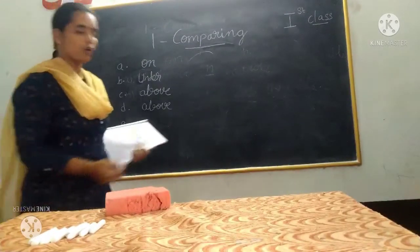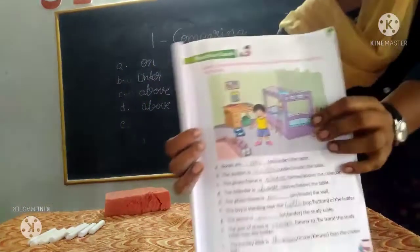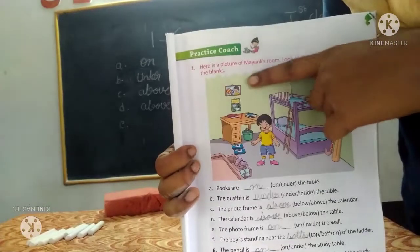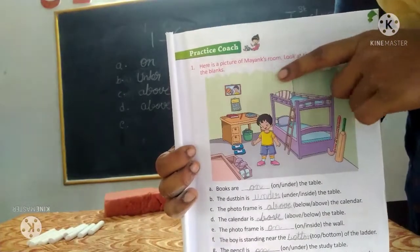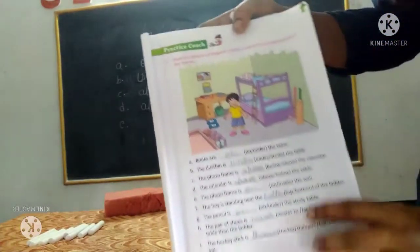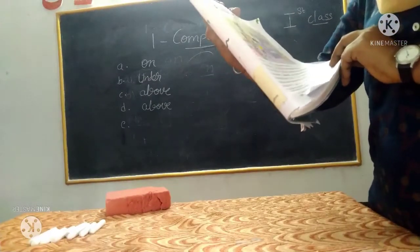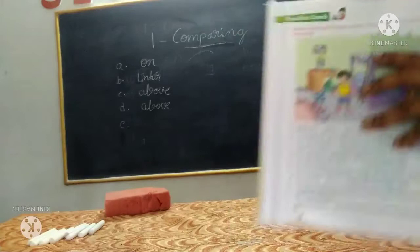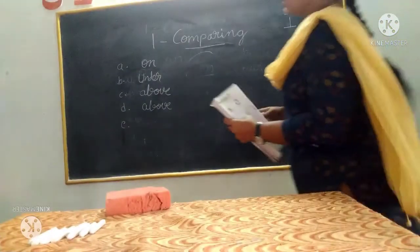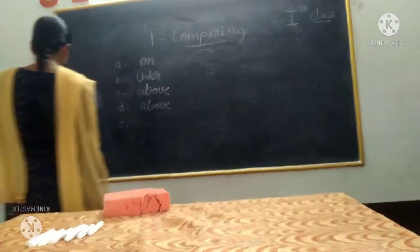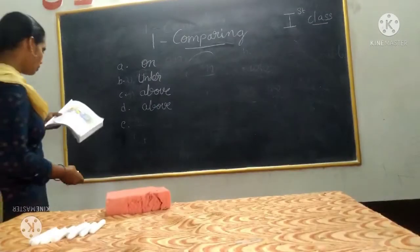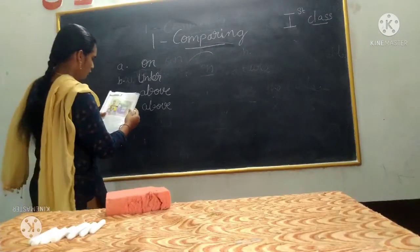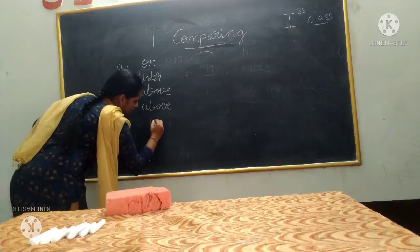E: photo frame is — dash — the wall. The photo frame is on the wall — goda pahin — on. The photo frame is on the wall.